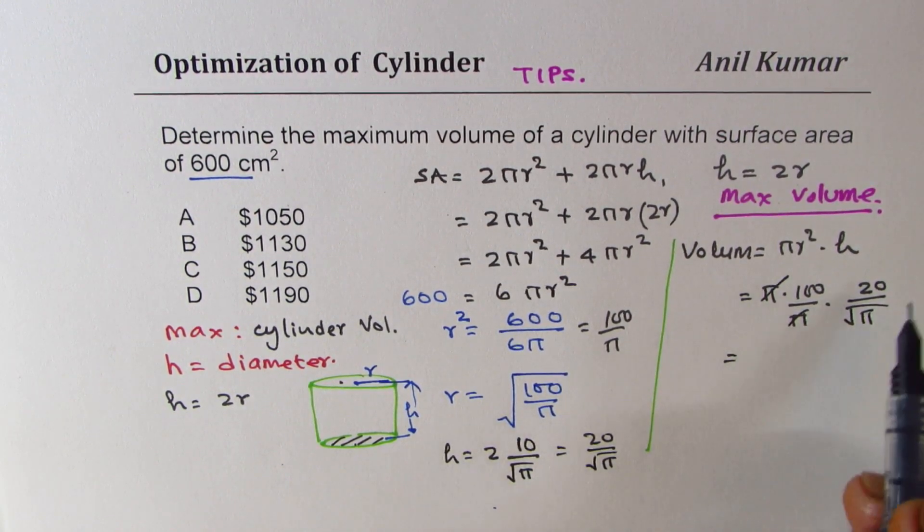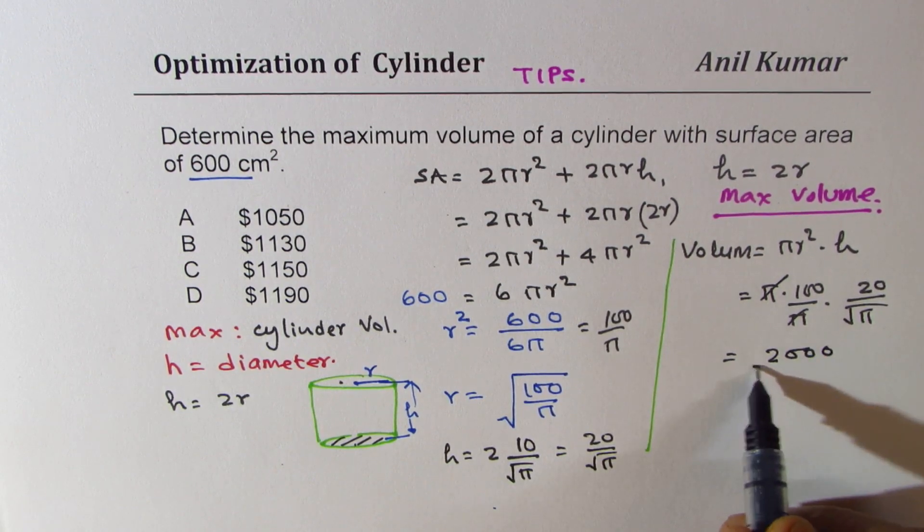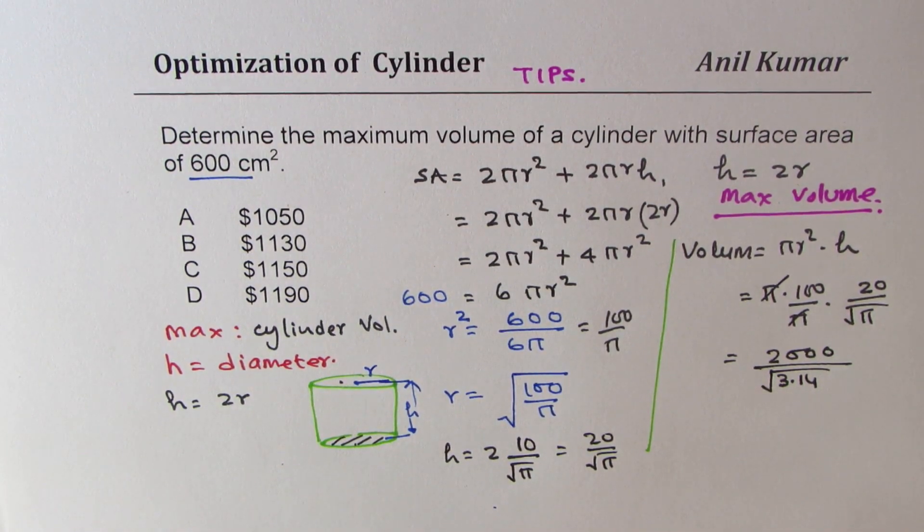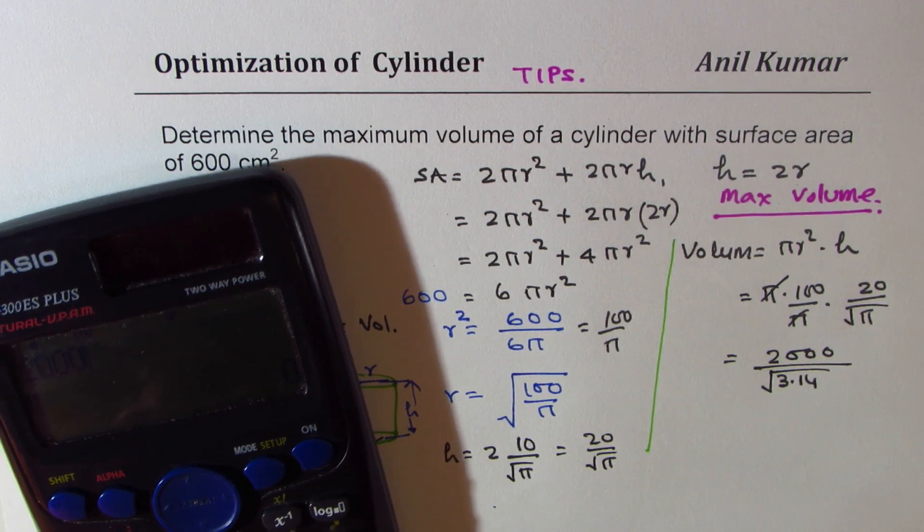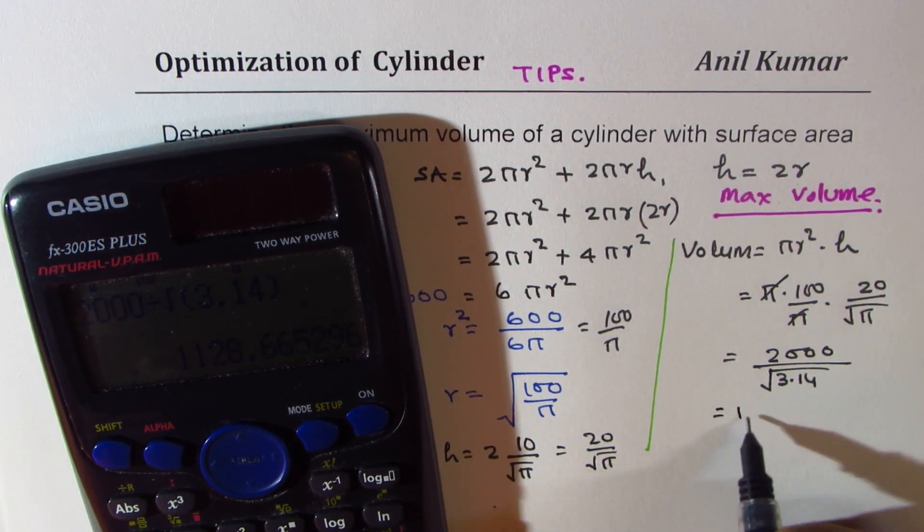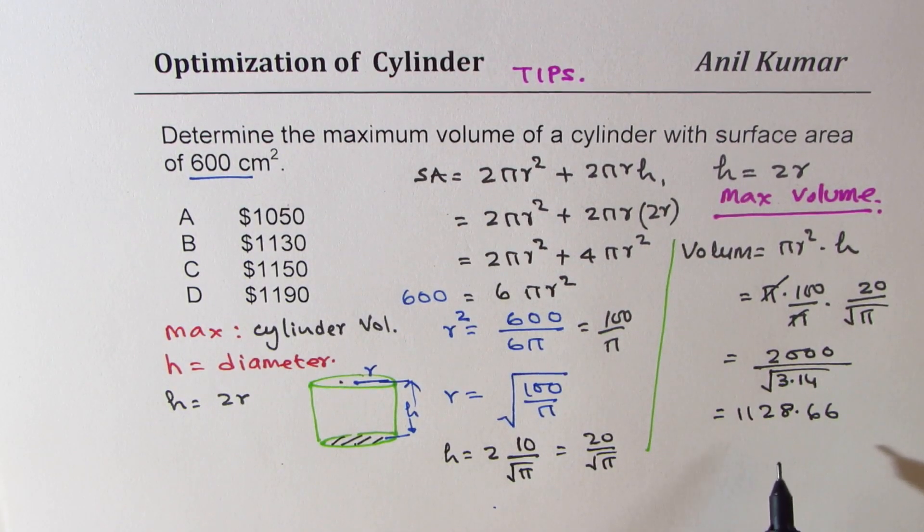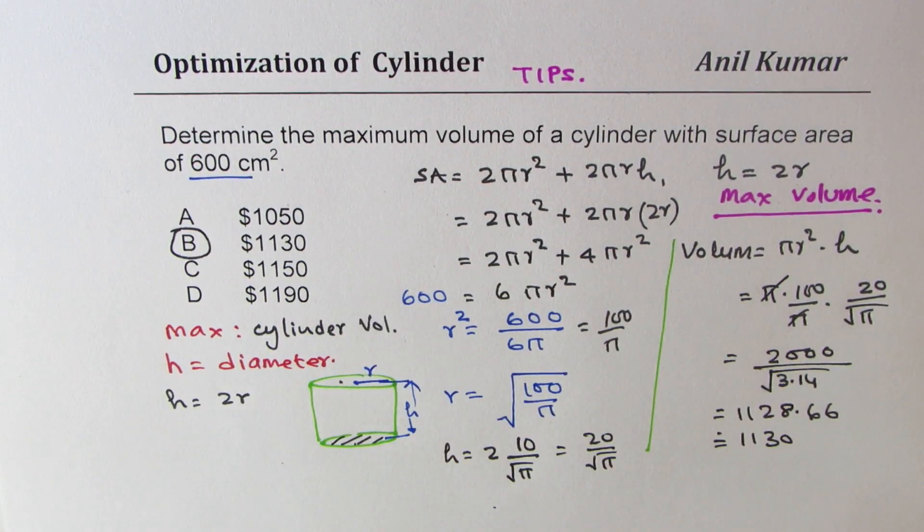So we can now use calculator to find this answer. We get 2000 over square root of 3.14, which is the value of pi. Let's use the calculator. So it is definitely, let's calculate this out. So 2000 divided by square root of 3.14, which is equal to 1128.66. So 1128.6 could be approximated to 1130. So option B is the right option.